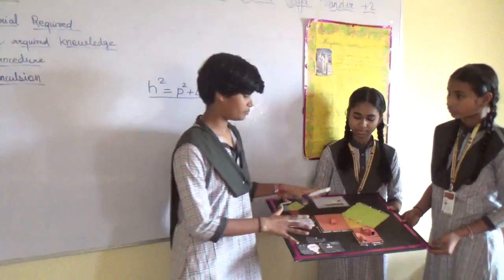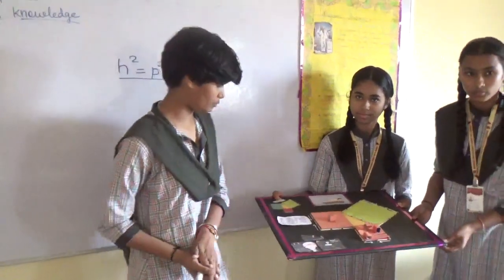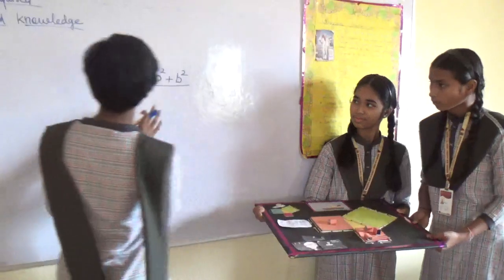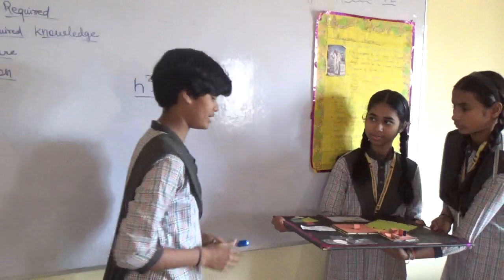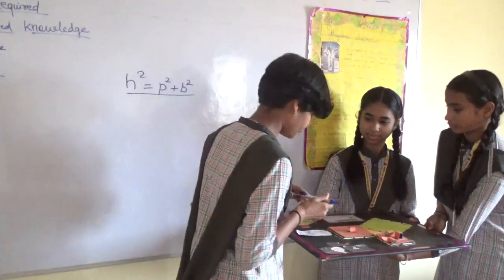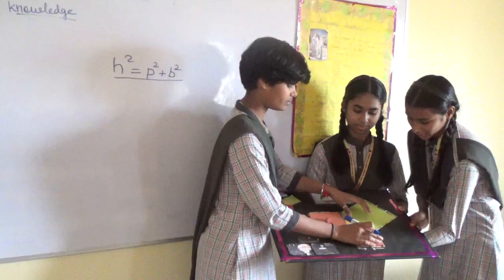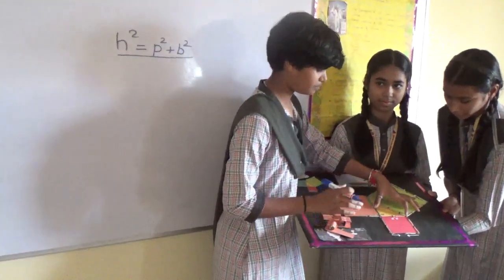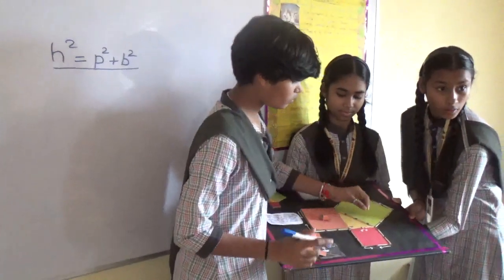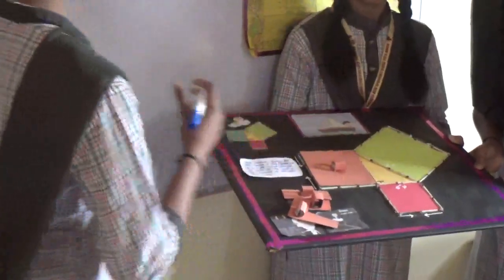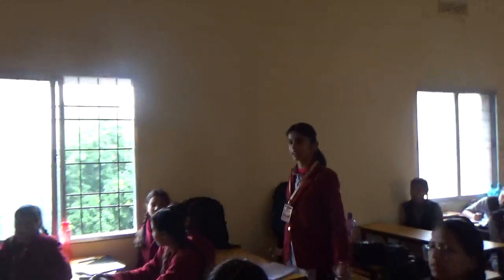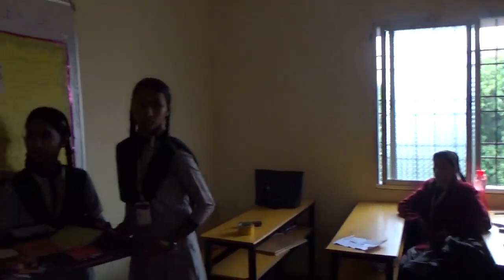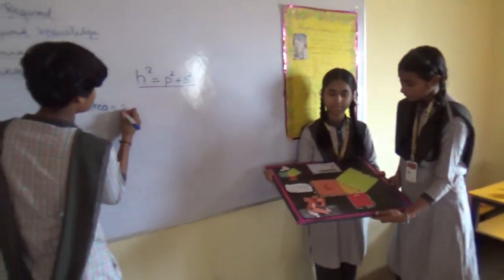We are here with a model. This is about Pythagoras theorem. Pythagoras theorem states that the square of hypotenuse is equal to the sum of the square of perpendicular and the square of base. This is a right angle triangle. This is the base square. What is the formula for the area of a square? Side squared.